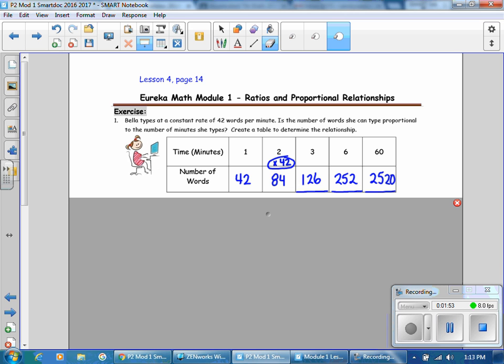Then it says, is the number she can type proportional? Well, since the multiplier is 42 words for each minute, she doesn't get faster, she doesn't get slower. The answer is yes. It is a proportional relationship between words and minutes.